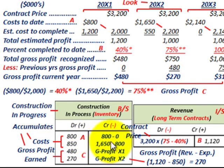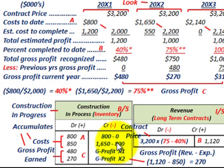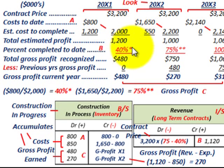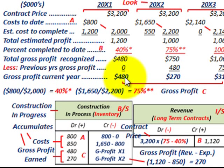Looking at this Construction in Progress account: for year one, our cost was $800 with no previous costs, so $800 for the first year. For year 20x2, you take the costs-to-date of $1,650 and subtract the previous year's $800, giving you the cost for the second year of $850. For gross profit: year 20x1 was $480 and year 20x2 was $270.